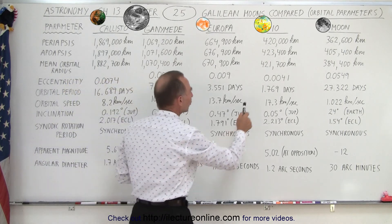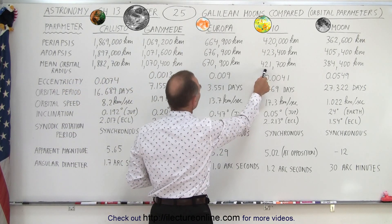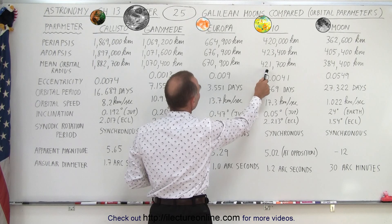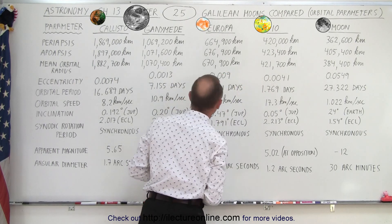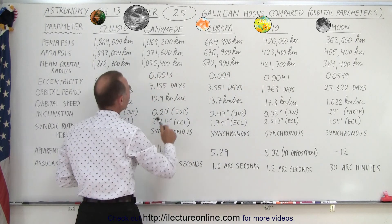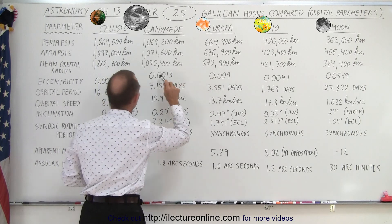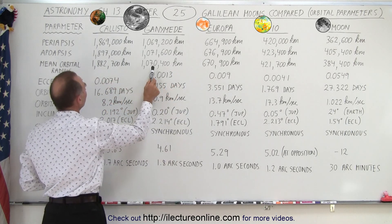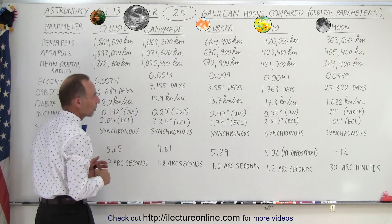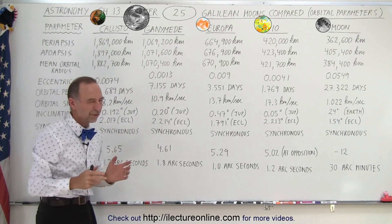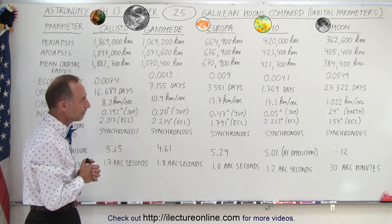Looking at the average orbital radius, the difference between Io and Europa is about 350,000 kilometers. The difference between Europa and Ganymede is about 400,000 kilometers, and the difference between Ganymede and Callisto is slightly over 800,000 kilometers. There doesn't appear to be a particular pattern.